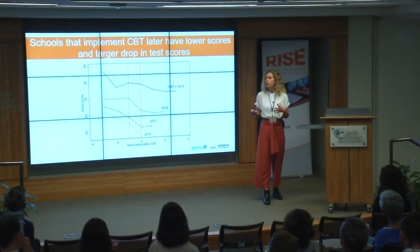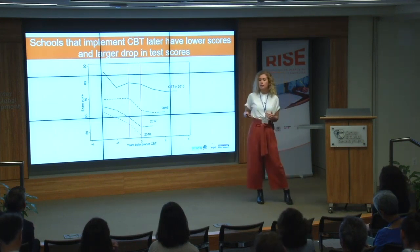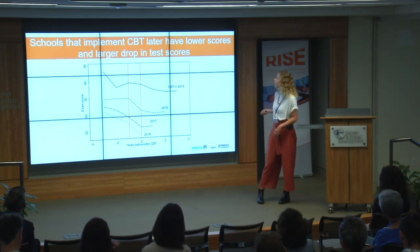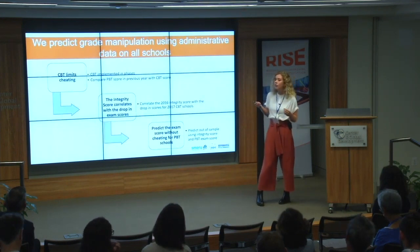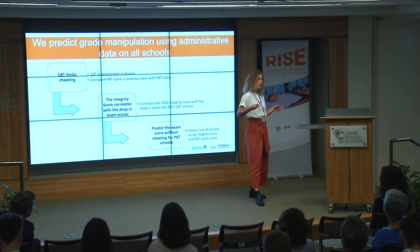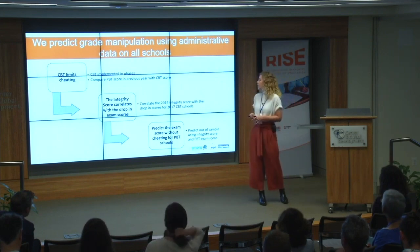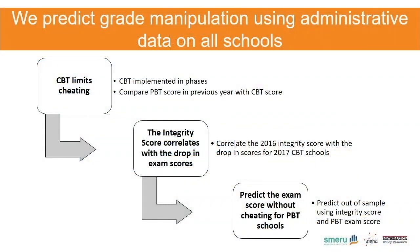To say something about how much cheating is going on across the whole country, we also need to estimate cheating in schools not yet implementing CBT — which is likely to be higher than what we see in early adopters. We do this by using the correlation between the integrity score and exam scores to predict what the non-cheating score would be for paper-based schools. First we argue CBT limits cheating. Second, the integrity score is very predictive of the score drop after schools implement CBT. Then we use the interaction between the paper-based score and the integrity score to predict the non-cheating score for paper-based schools.